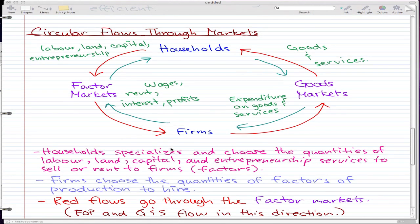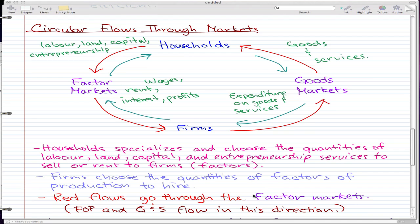So the firms will get to choose the quantities of factors of production to hire. And the red flows, this side, the red flows on the left side go through the factor markets. And the factor of production and goods and services flow in this direction.